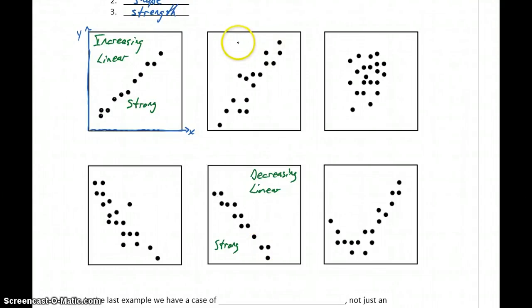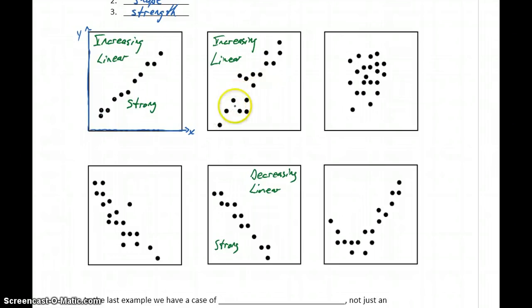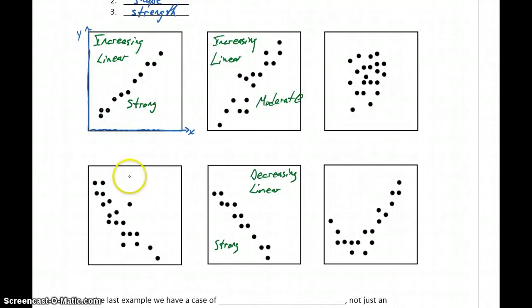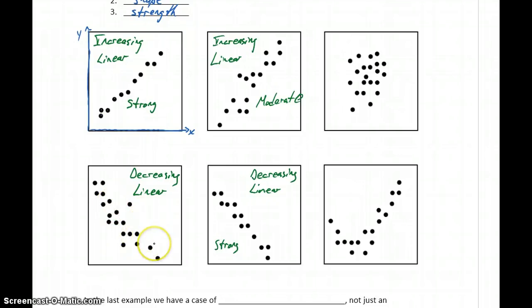Other cases we might see: in our second graph here, we still have an increasing trend and a linear shape, but not necessarily a weak association — just not quite as strong, because there's a little bit more scatter in the graph. We might refer to this as a moderate or fairly strong association. The first graph on the second line is again a decreasing trend, with a shape that is still more or less linear, and again a moderate strength, because the points aren't following the straight line pattern quite as closely.